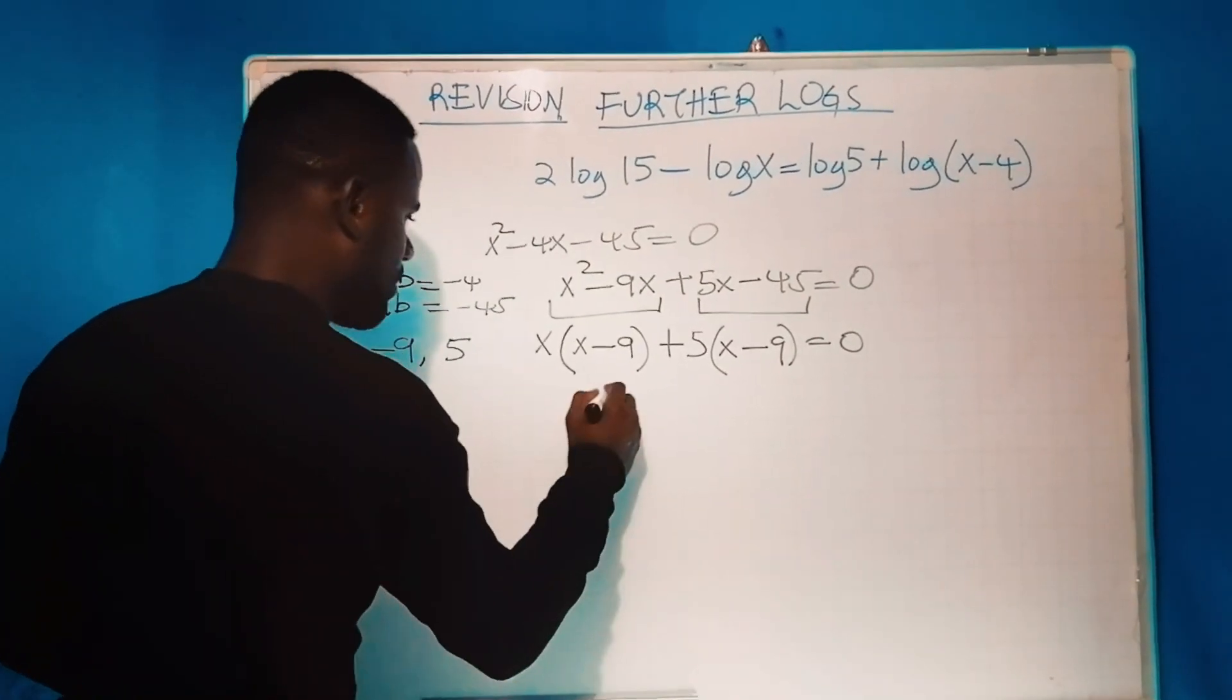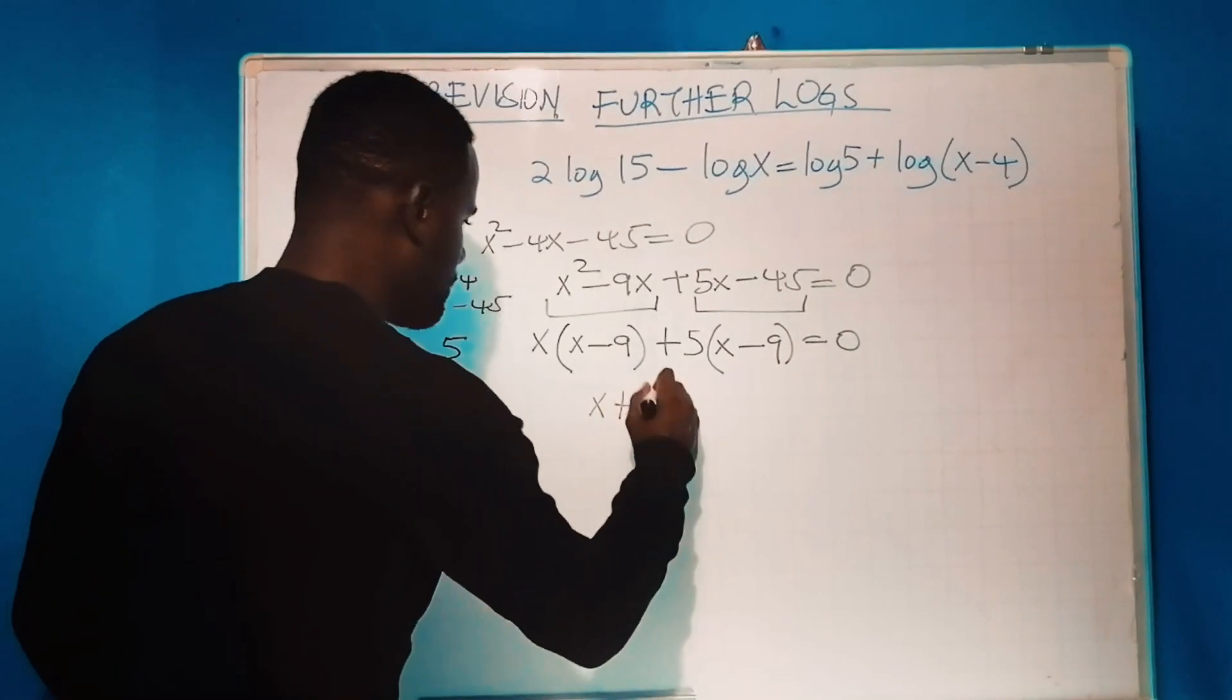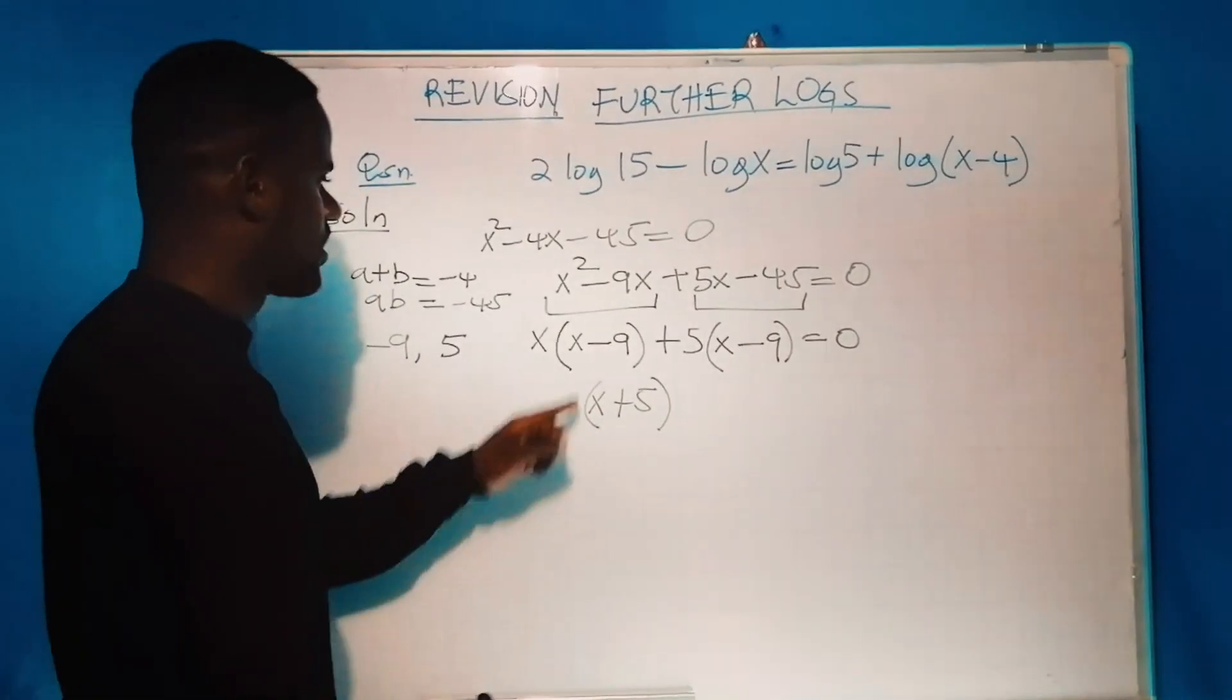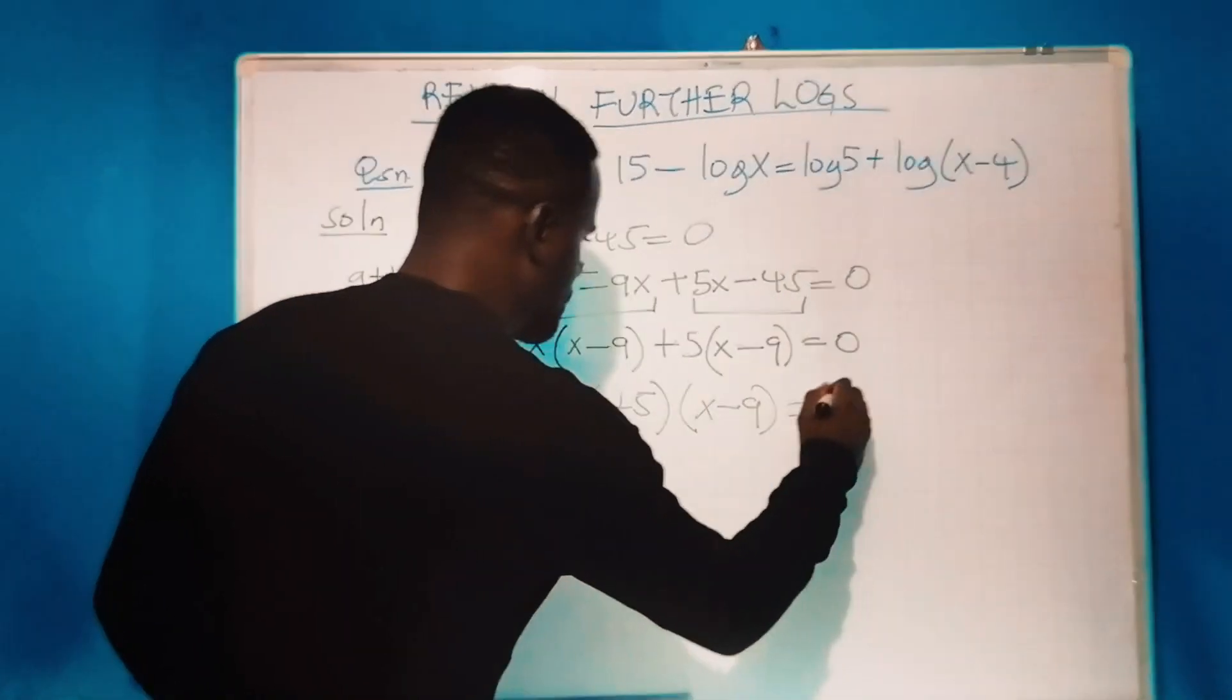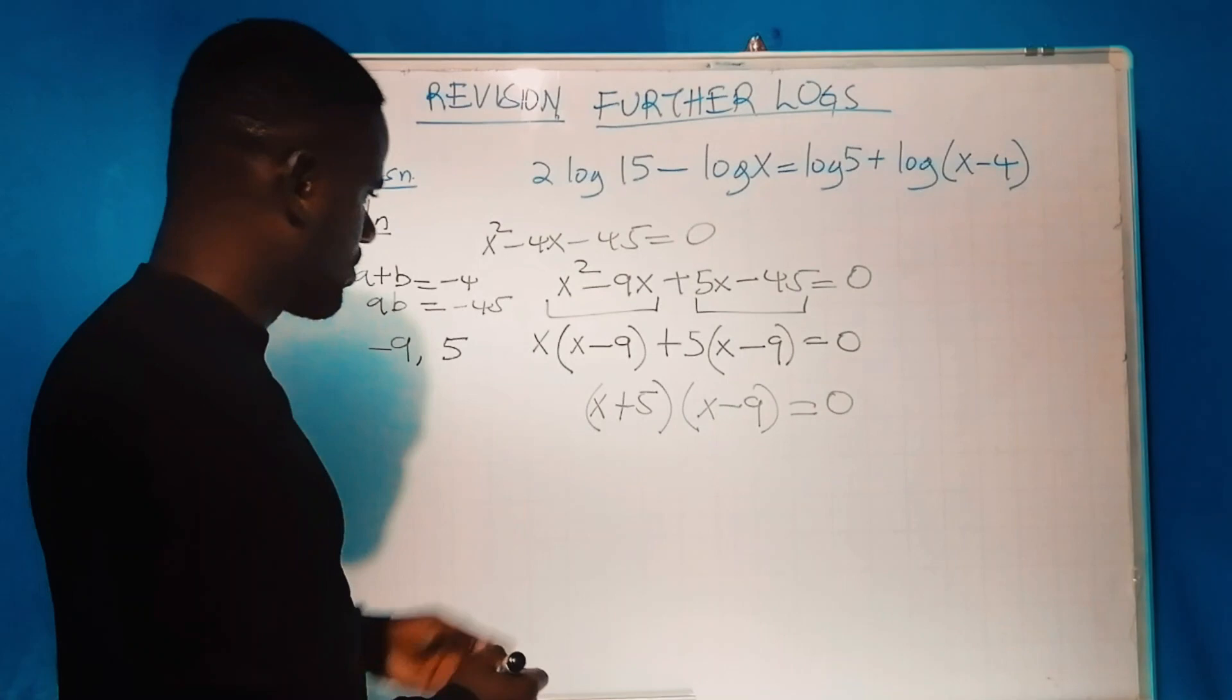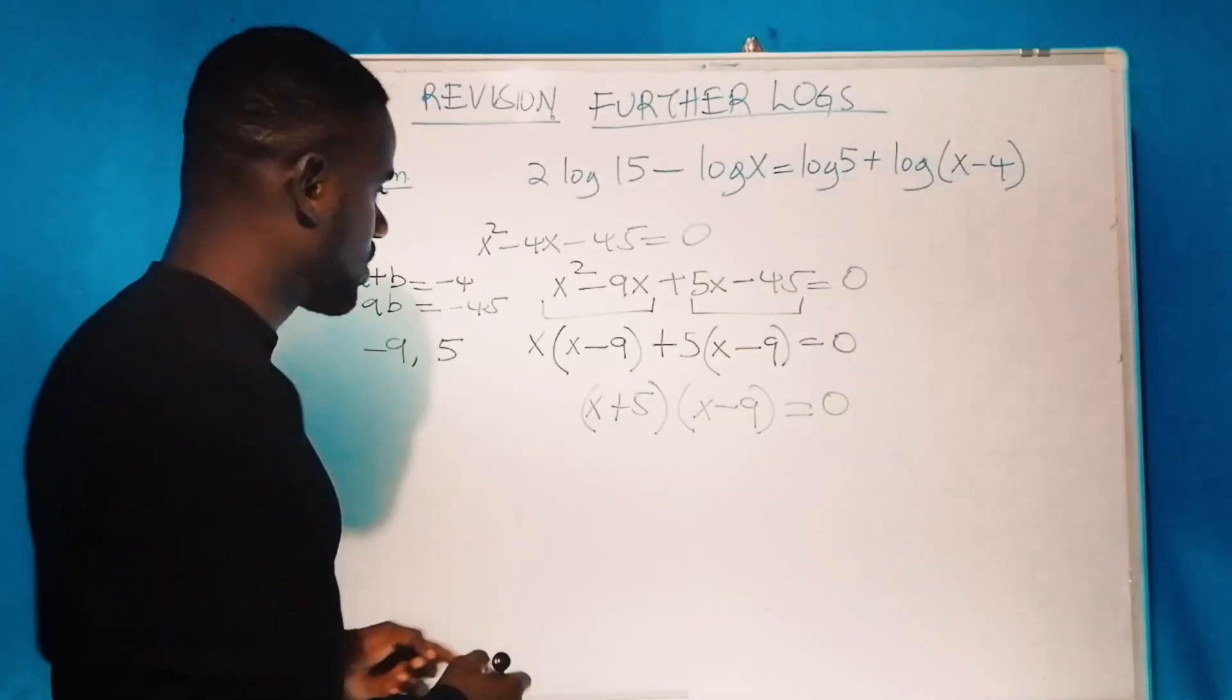The next step: I'm taking x and +5 all in one bracket, then I'll have (x + 5)(x - 9) = 0. Now we want to get the roots of the quadratic equation.